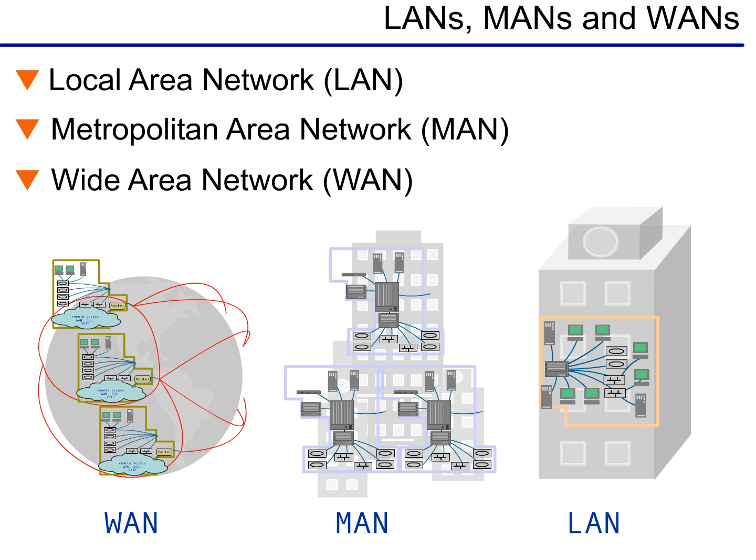Now we'll take a look at the three main types of networks: the LAN, the MAN, and the WAN. The distance apart computers are from each other determines the type of network they'll use to communicate. The first type of network is for computers close to each other. It's called a local area network, or LAN.